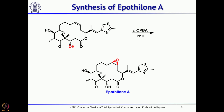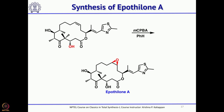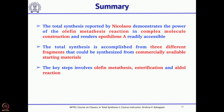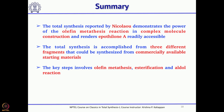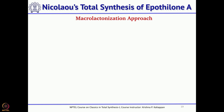This is the first-generation synthesis of Epothilone A reported by Nicolaou's group. The key steps involved are ring-closing metathesis, aldol reaction, and esterification. Overall it took about 11 steps with a yield close to 7%.